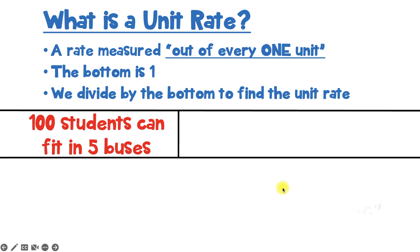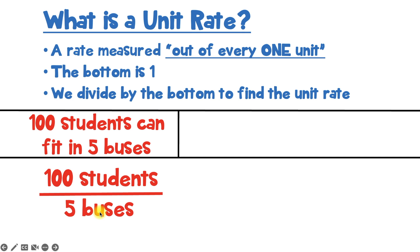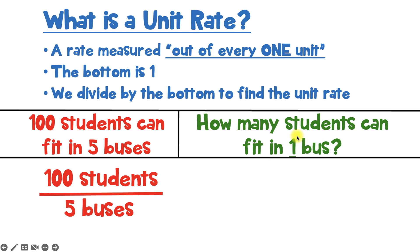Let's look at our next example. Let's say that we know a hundred students can fit in five buses. Again, this is how you would normally see it in the word problem. But in its usual form it would look like this — with a hundred students in the top of the rate and the five buses in the bottom of the rate. Now, this is a rate, but we're talking about unit rates. So how do I turn this into a unit rate? If you said divide by five, you're absolutely right. And that's going to end up telling us how many students can fit in one bus, because it's a unit rate and it's out of every one unit.